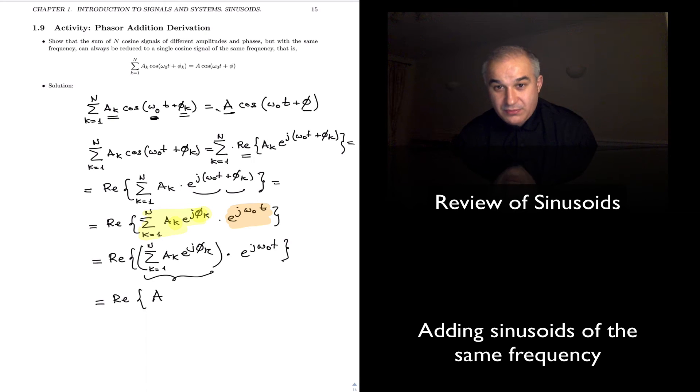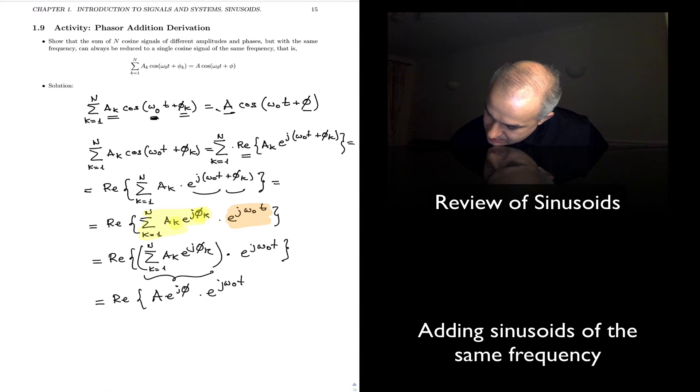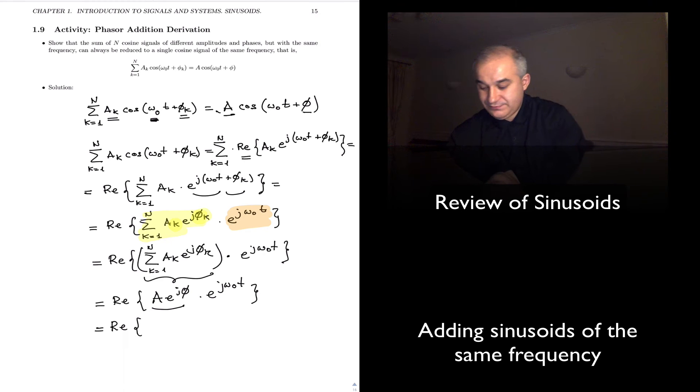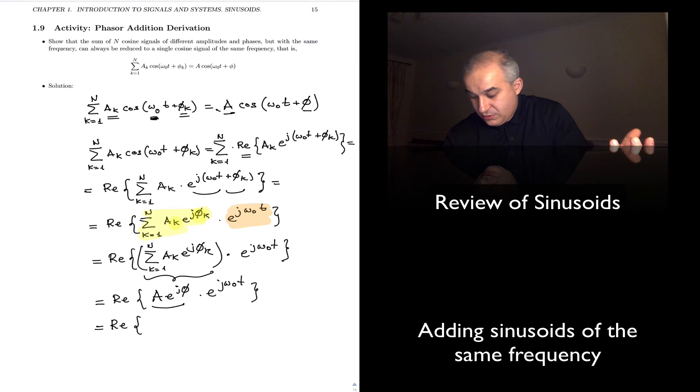A particular number, A e to the j theta. That's all you get. Notice, this step is key. You add complex numbers, and you get a complex number, so, of a particular amplitude and a particular phase.